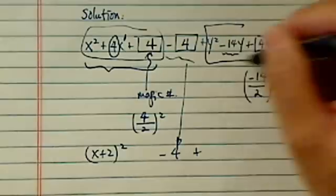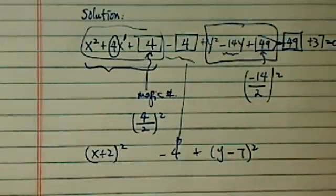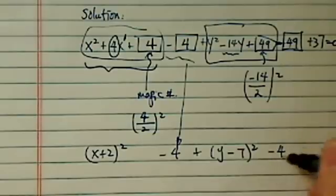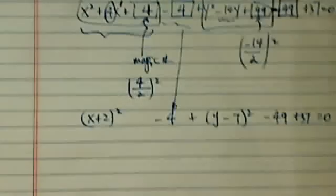Plus I'm going to group those three again, after all that hard work, I better have a perfect square. And then I have my minus 49 plus 37 equal to 0. So I'm 90% there.